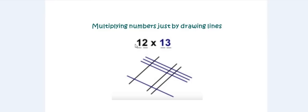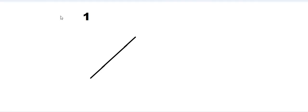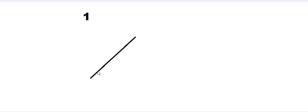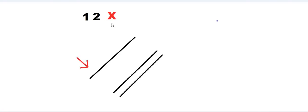We have the numbers 12 and 13. What we do is take digits starting from the left-hand side and proceed. First, we take the digit one and draw one line in some orientation. Then we take the number two and, after leaving some space, draw two more lines.